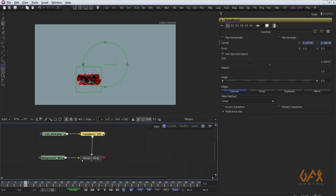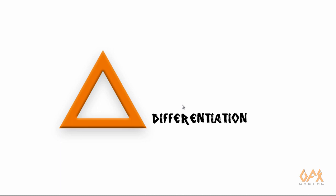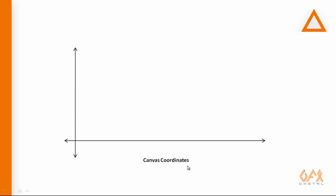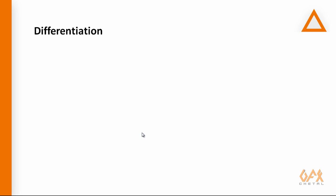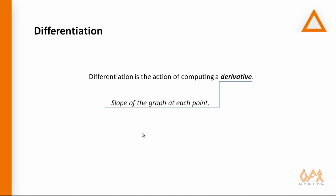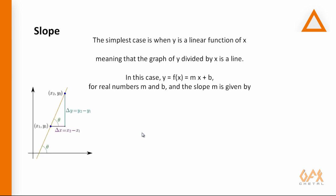For the concept of differentiation, here I have a PPT. This is my coordinate system of the canvas — not the animation coding system — and this is my path of animation. At time 0 and at time 100, I want to consider a reference point and find the angle of the tangent at that point. Differentiation is the action of computing derivatives, and the derivative is the slope of the graph at each point. The simplest concept of slope uses a linear function.